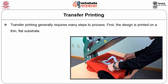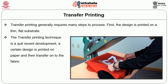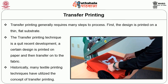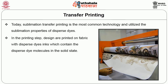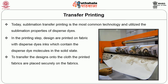Transfer printing generally requires many steps. First, the design is printed on a thin flat substrate; then transferred onto the fabric. A design is printed on paper and then transferred to the fabric. Today, sublimation transfer printing is the most common technology, utilizing the sublimation properties of dispersed dyes. Designs are printed with dispersed dye inks containing dispersed dye molecules in solid state, then transferred onto the cloth. This type of printing was introduced in the year 1960.